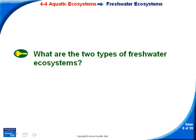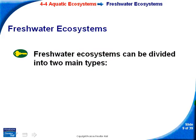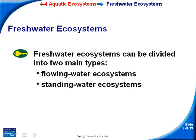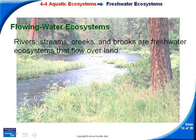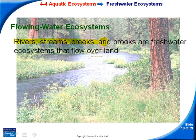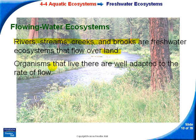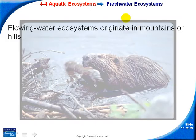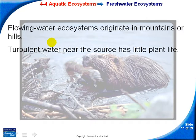Freshwater ecosystems are divided into two types: flowing water ecosystems and standing water ecosystems. Flowing water ecosystems include rivers, streams, creeks, and brooks — freshwater ecosystems that flow over land. Organisms living there have to be adapted to the rate of flow. These flowing water ecosystems originate in mountains, since water flows downhill.